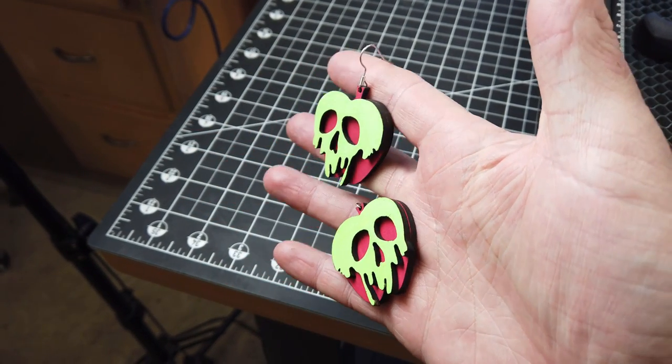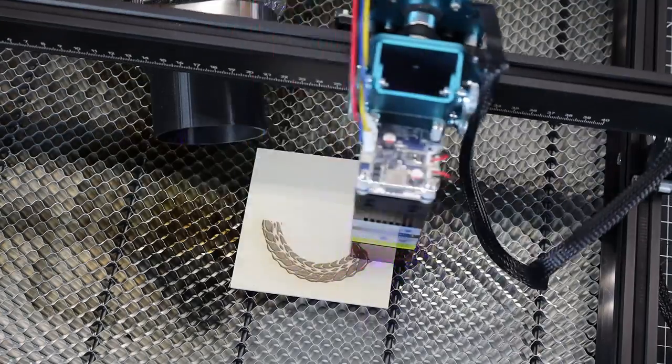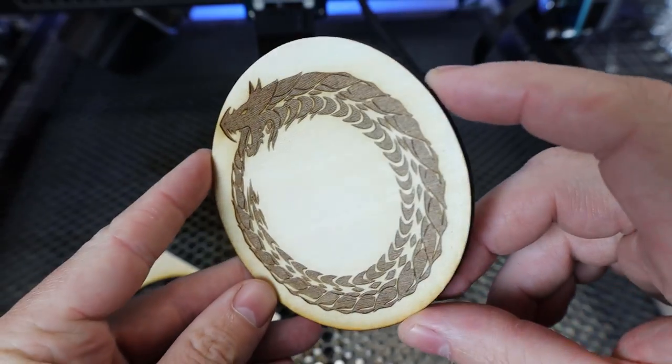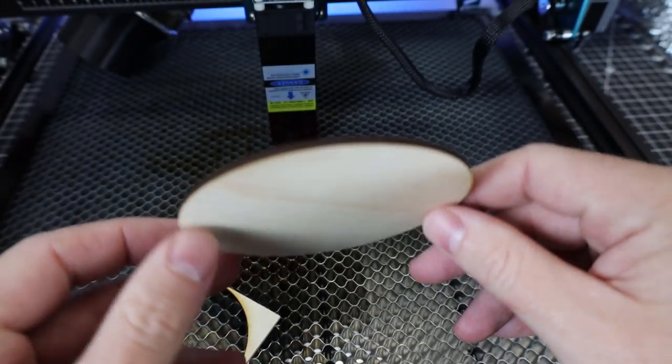I just used some acrylic paint, super glue, and earring hooks. And of course, you can set it up to engrave and cut. So it'll do the engraving first and then cut it out. And you're not only limited to engraving wood,